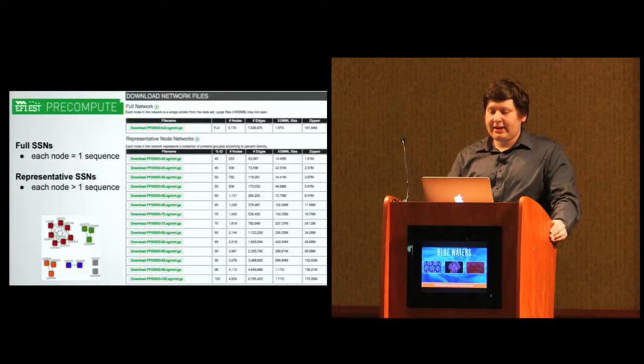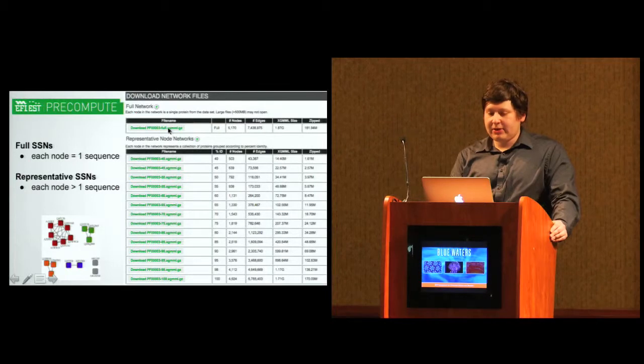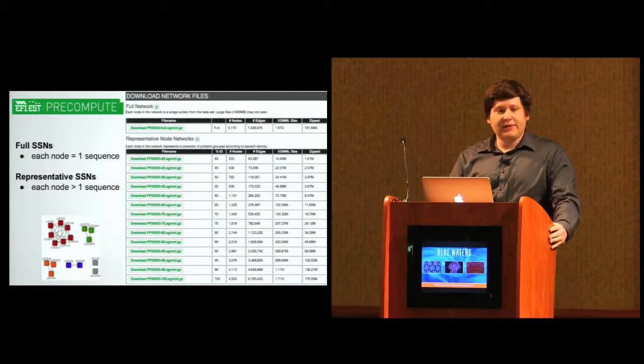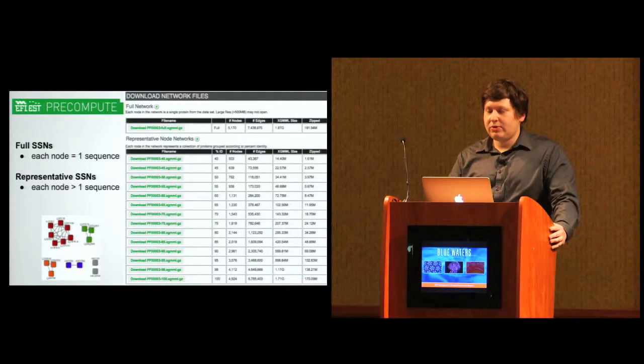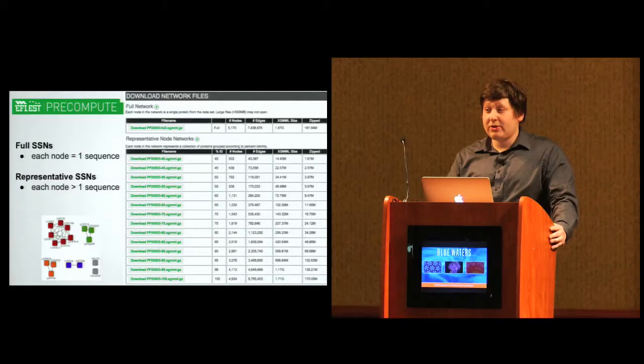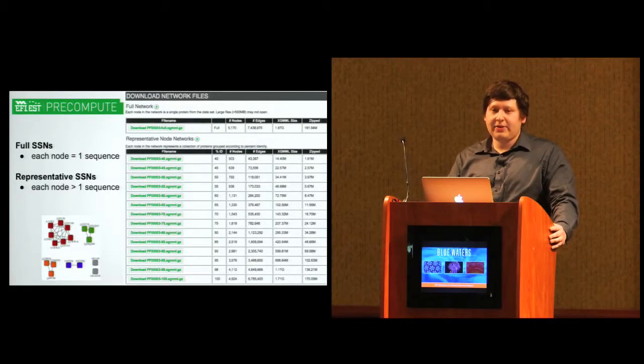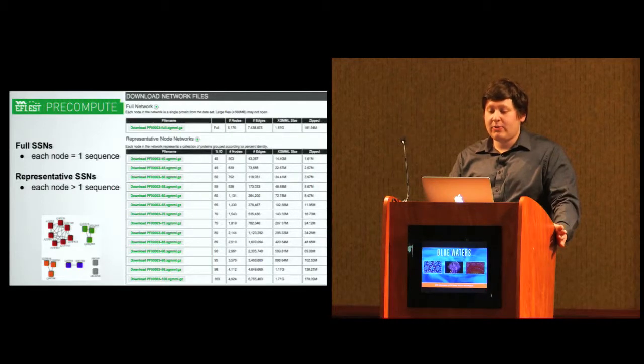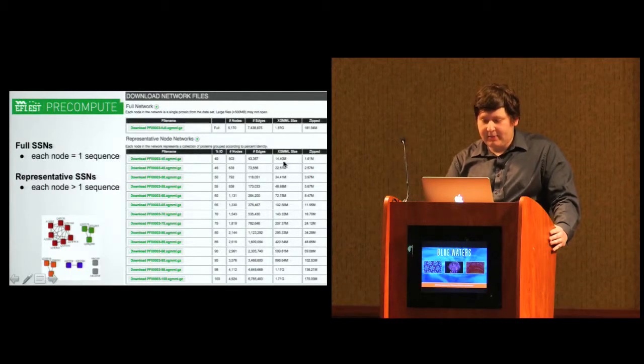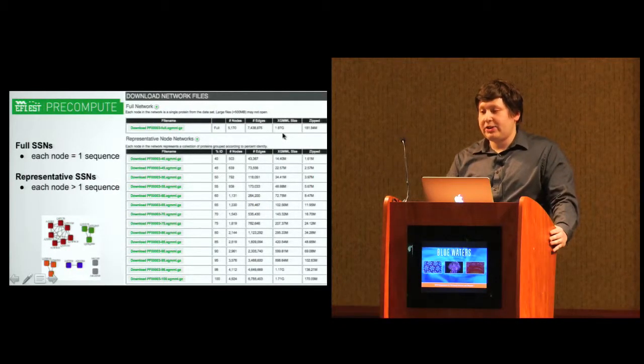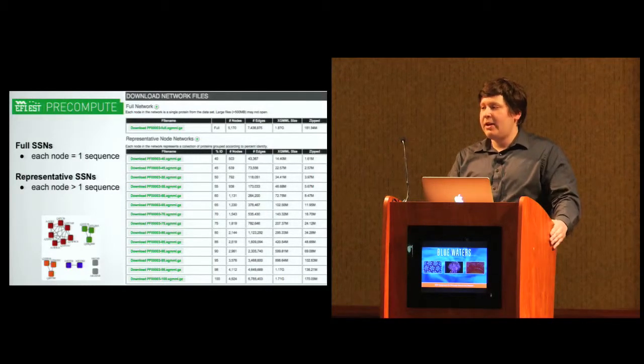What we provide is full sequence similarity networks and representative sequence similarity networks. In a full sequence similarity network, a node represents one protein sequence. But in representative sequence similarity networks, each node represents more than one sequence. The reason for this is we want to be able to fit these networks into Cytoscape, into the computer's memory. Different users have different system specs. If they have a very weak computer, they want to use smaller networks. If you look at the size, a smaller network is only 14 megabytes versus a full network is 2 gigabytes, which if you don't have enough RAM on your computer, you wouldn't be able to open up and visualize.